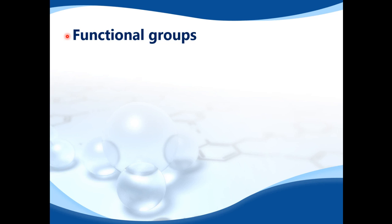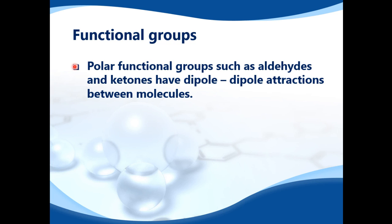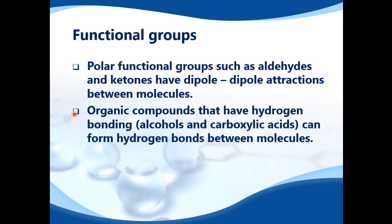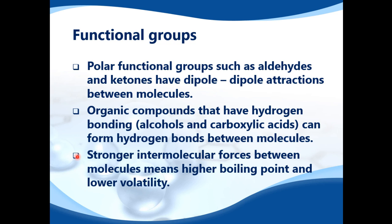The last factor is functional groups. Polar functional groups such as aldehydes and ketones have dipole-dipole attractions between molecules. If you have a polar molecule, one side is a little bit positive and one side is a little bit negative, and you get an attraction called a dipole-dipole attraction. Organic compounds that have hydrogen bonding, such as alcohols — which have an OH group — and carboxylic acids, which also have an OH group, can form hydrogen bonds between molecules. Stronger intermolecular forces between molecules means a higher boiling point and lower volatility.